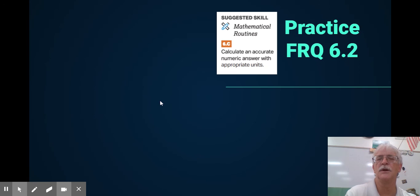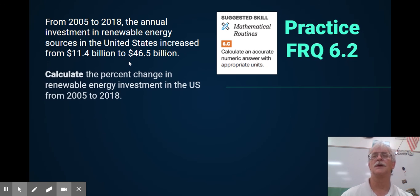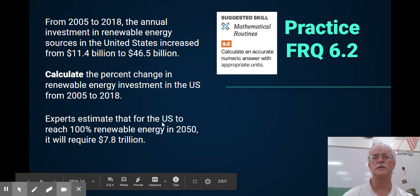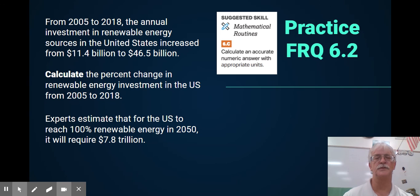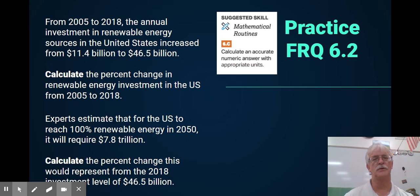A practice FRQ for topic 6.2: From 2005 to 2018, annual investment in renewable energies in the U.S. increased from $11.4 to $46.5 billion. Can you calculate the percent change in renewable energy investments? Make sure to indicate whether it's an increase or decrease. Second, experts estimate that for the United States to reach 100% renewable by 2050 it would cost $7.8 trillion. Can you calculate the percent change this would represent from the 2018 investment level of $46.5 billion? Hopefully this was helpful.